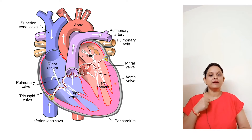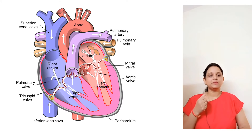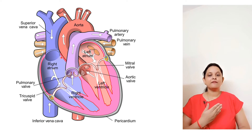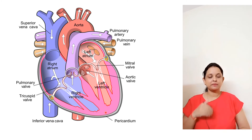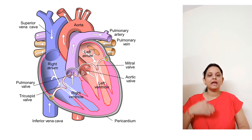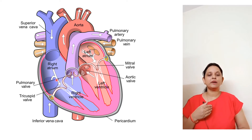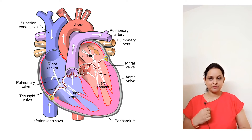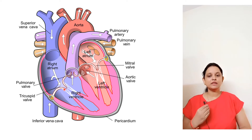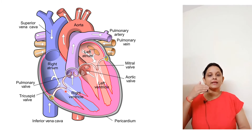The heart is divided into four chambers. The upper, relatively small chambers are called atria, and the lower, larger chambers are called ventricles. Atria are separated by a septum called the inter-atrial septum. Ventricles are separated by a septum called the interventricular septum. The atrium and ventricle of the same side are also separated by a septum called the atrio-ventricular septum.